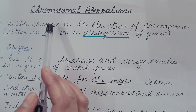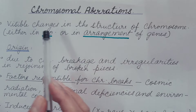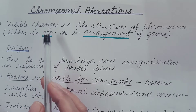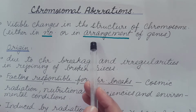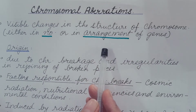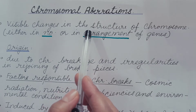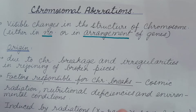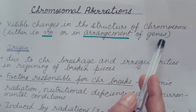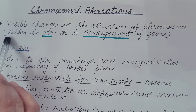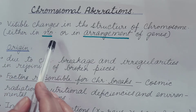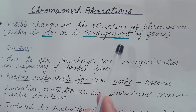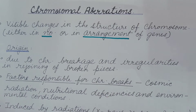Today we are going to discuss about chromosomal aberrations. What are chromosomal aberrations? These are also known as structural aberrations. As the name suggests, it is the change in the structure of the chromosome — visible changes in the structure of the chromosome. This change may be either in the number of genes or in the arrangement of genes present in the chromosome.